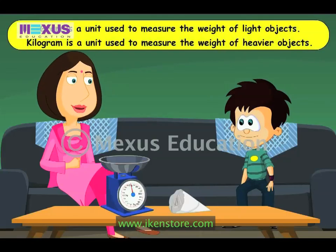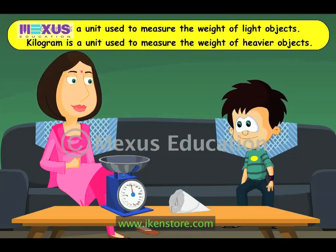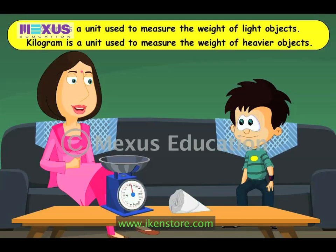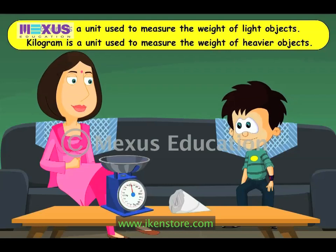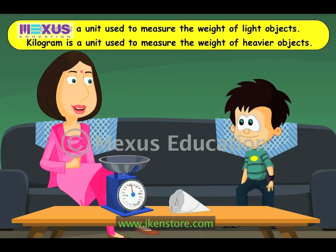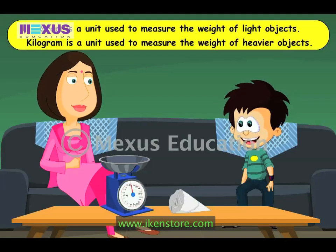If we measure heavy things in grams, the value of their weight would be a big digit number. So to make it easier, we measure it in kilograms. In the same way, it is easier to measure the mass of something small, like this packet of sugar, in grams. I get it now! So because I am much heavier than this bag of sugar, my weight is usually measured in kilograms, but the weight of this small bag of sugar can be measured in grams.